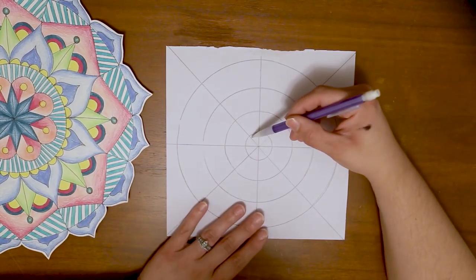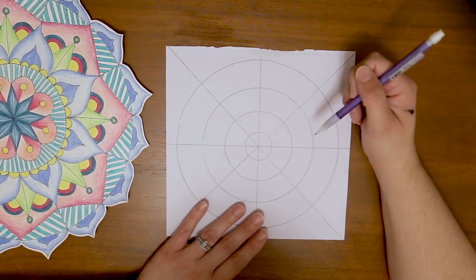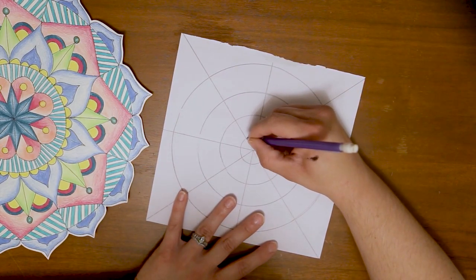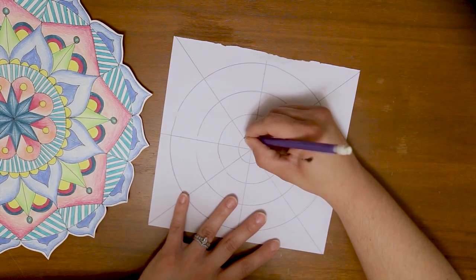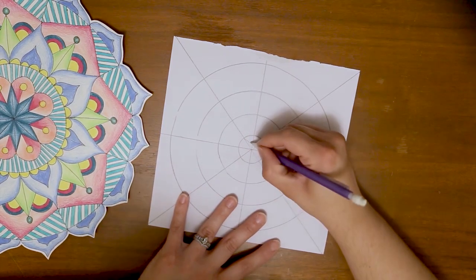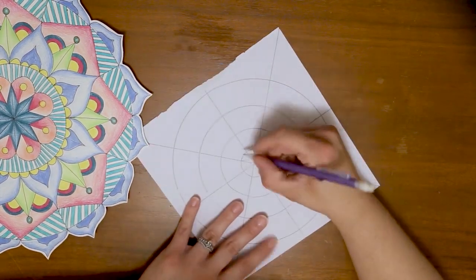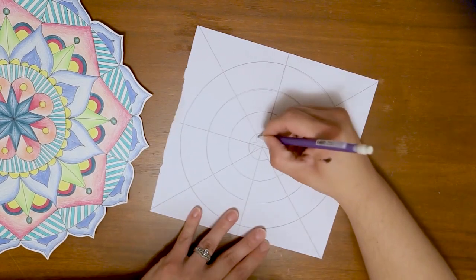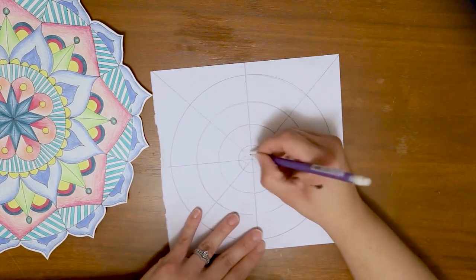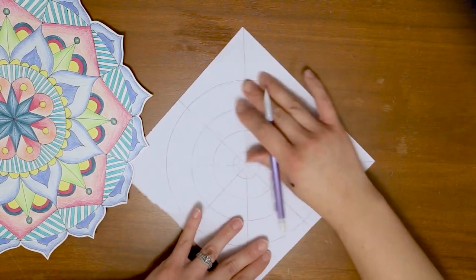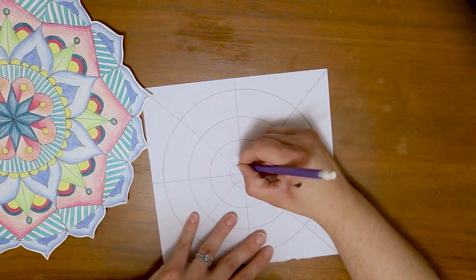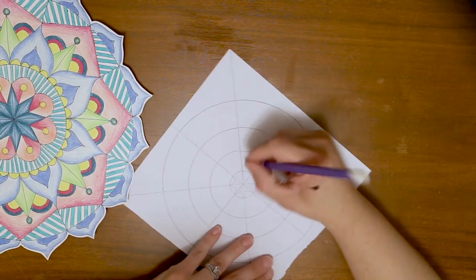So when I'm drawing, whatever I draw in one pie slice, I'm going to repeat in each of the pie slices. The first thing that I'm going to draw is I think I'm going to make a little V shape. I'm going to make a V that comes in to the middle here and then comes back out. I like to rotate my piece of paper as I'm drawing, so that way I'm just drawing the same line over and over again. It helps me make sure that what I'm drawing stays the same in each pie slice.